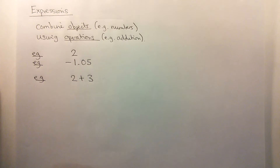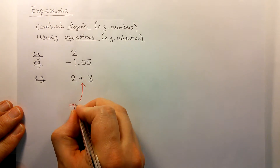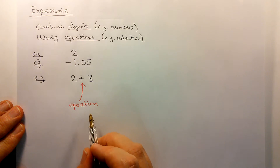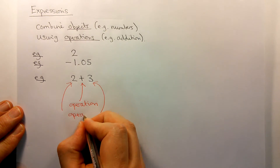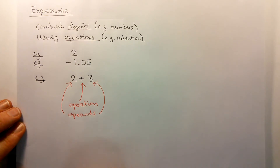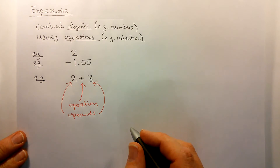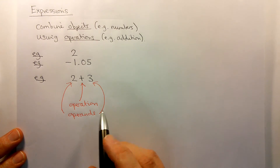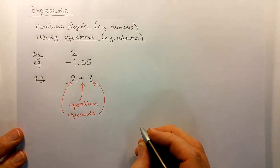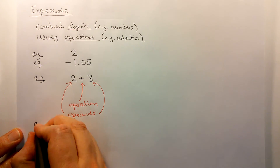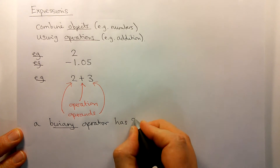Now let me introduce some terminology to help us talk about expressions. In an expression like this we have the operation — this is the thing which is acting on the objects — and the objects themselves, in this case the 2 and the 3, are called the operands. There are different kinds of operations that we can have. In this case the operation acts on two operands, so this is an example of what's called a binary operation or operator. A binary operator has two operands.